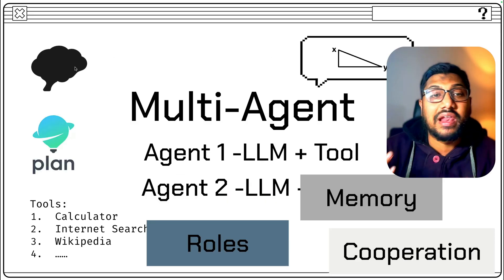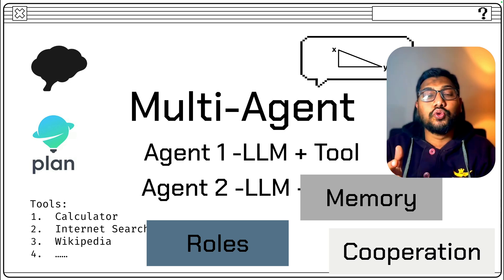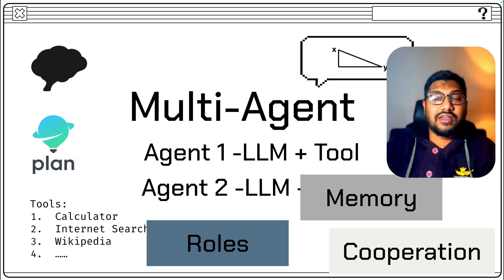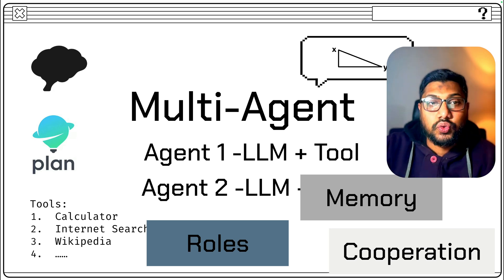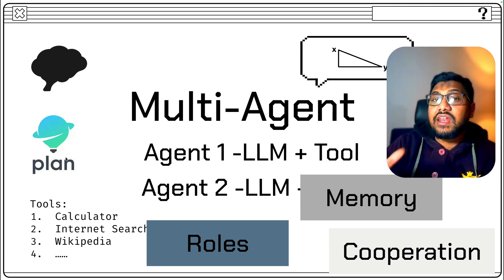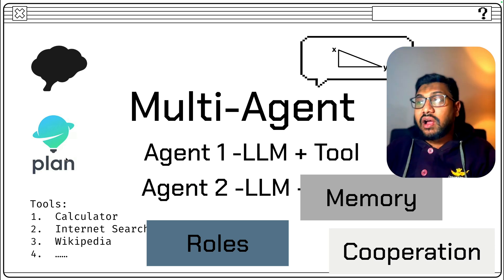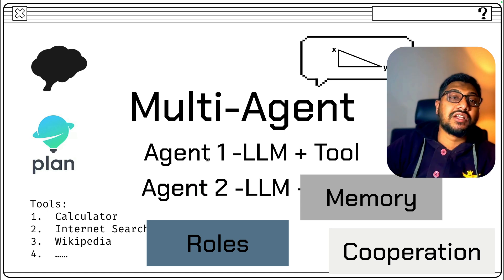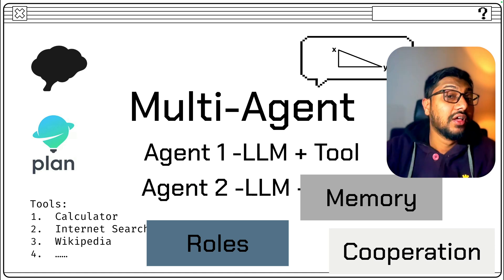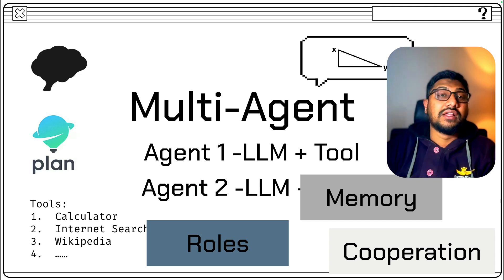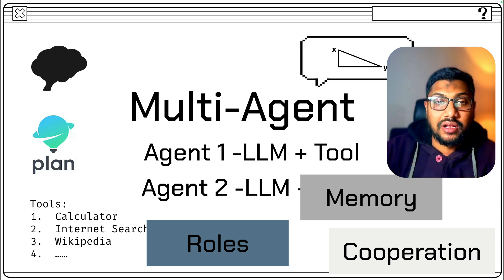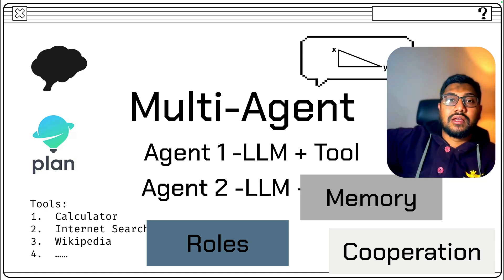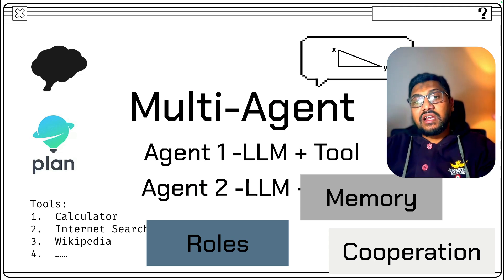The agent should also have some kind of planning capability. If you give a question like 'do research about Bitcoin pricing,' the agent should have the capability to first plan what set of things it has to do and how many agents it has to summon. With planning capability, you might be entering into a multi-agent system — more than one agent, more than one LLM, more than one tool. For example, one agent with Wikipedia, another with Google search, another with a Python REPL, and another with an API like CoinDesk.